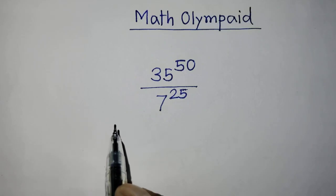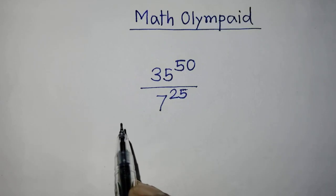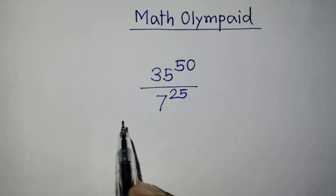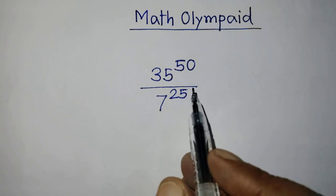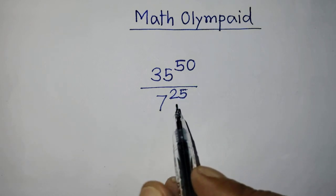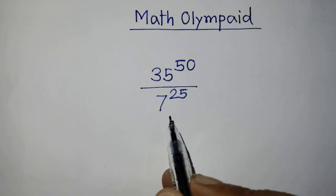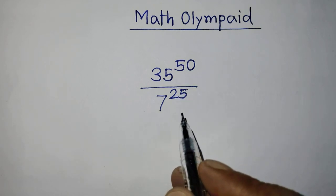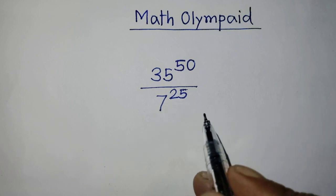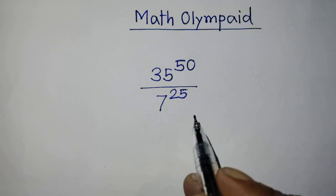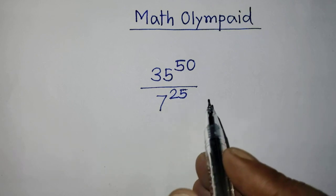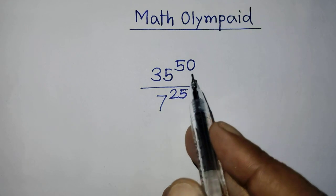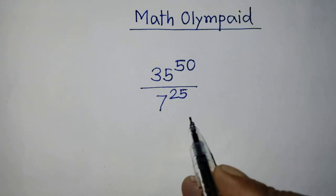Hello guys, you are welcome to solve this math problem which is 35 whole to the power 50 over 7 to the power 25. Today I am telling you how to simplify this exponential form.